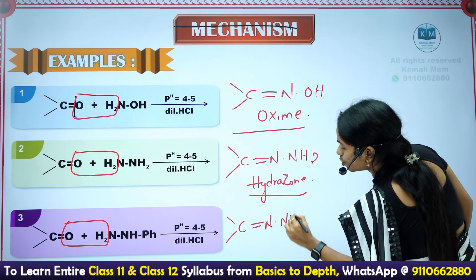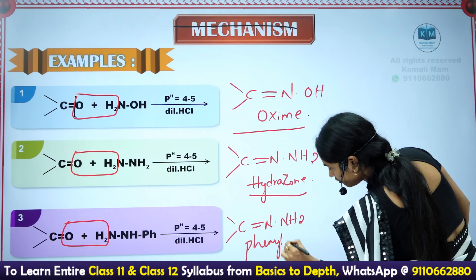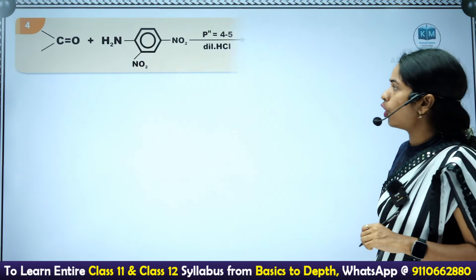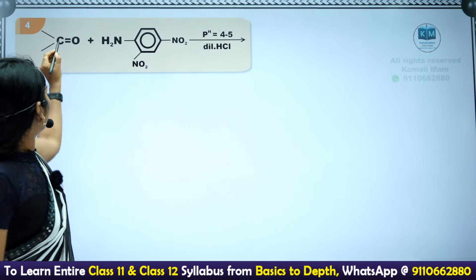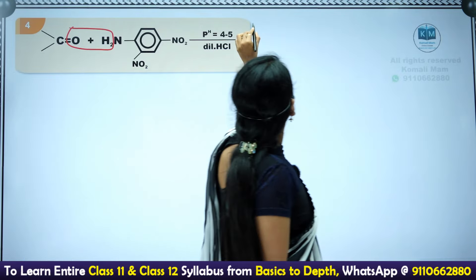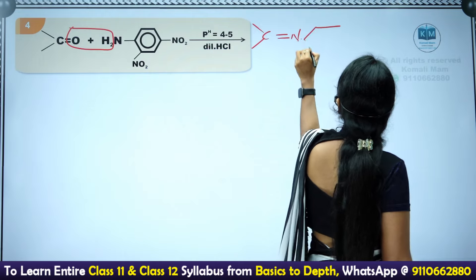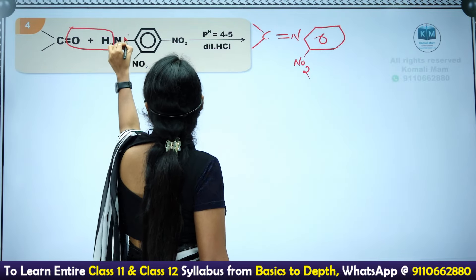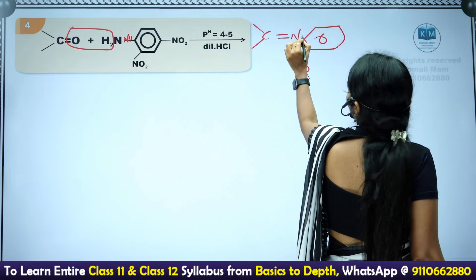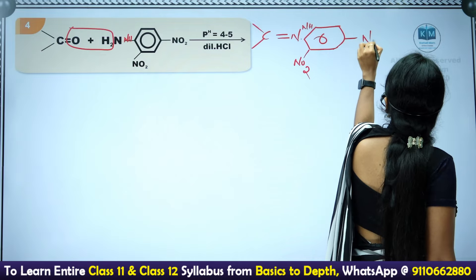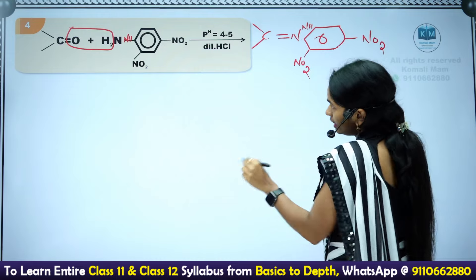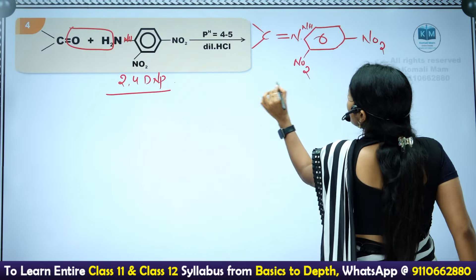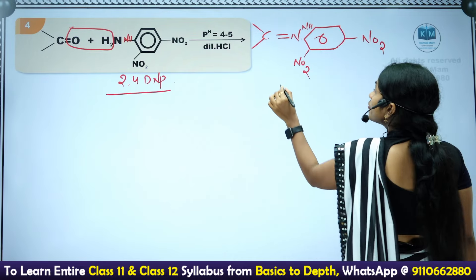For phenylhydrazine: remove two hydrogens and one oxygen from the carbonyl, giving C=N-NH-Ph. This product is called a phenylhydrazone. For 2,4-DNP (2,4-dinitrophenylhydrazine): remove two hydrogens and one oxygen, giving C=N-NH-(2,4-dinitrophenyl). This product is called the 2,4-DNP derivative.